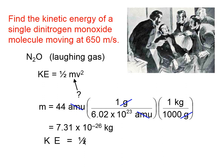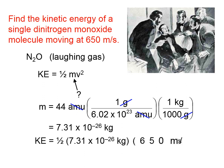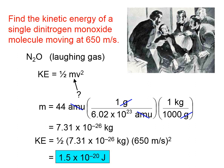Now it's a matter of putting all of that into the kinetic energy equation: one-half times the mass we calculated times the speed squared — squaring only the speed. We're going to round to two significant figures because that's what we started with, and the unit for energy is joules.